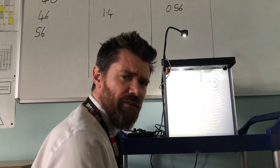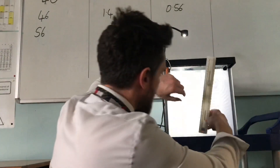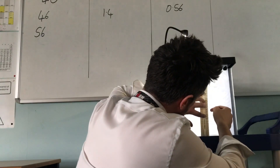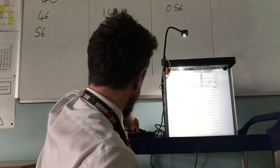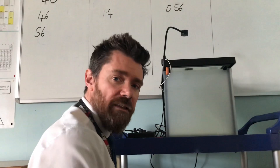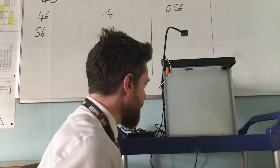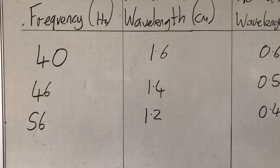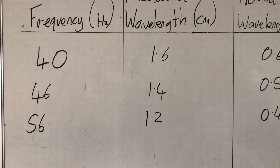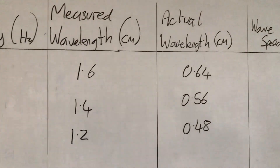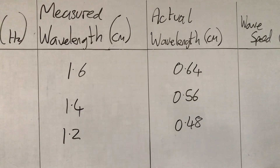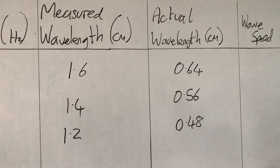We're now at 56 hertz — you can hear the difference in the oscillator. Placing the ruler on the screen and counting five wavelengths, that gives us 6 centimetres. Dividing by five gives a wavelength of 1.2 centimetres for one wave. Dividing by the magnification of 2.5 gives an actual wavelength of 0.48 centimetres at 56 hertz.